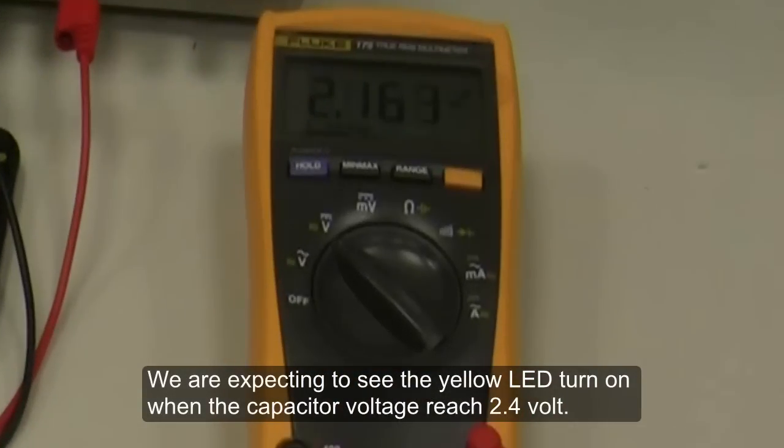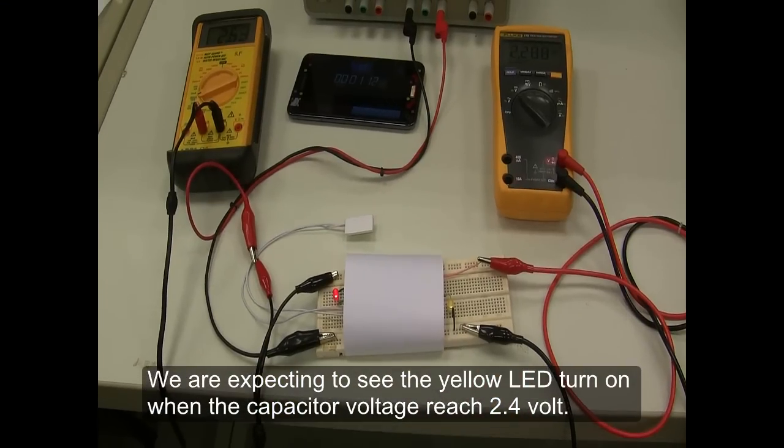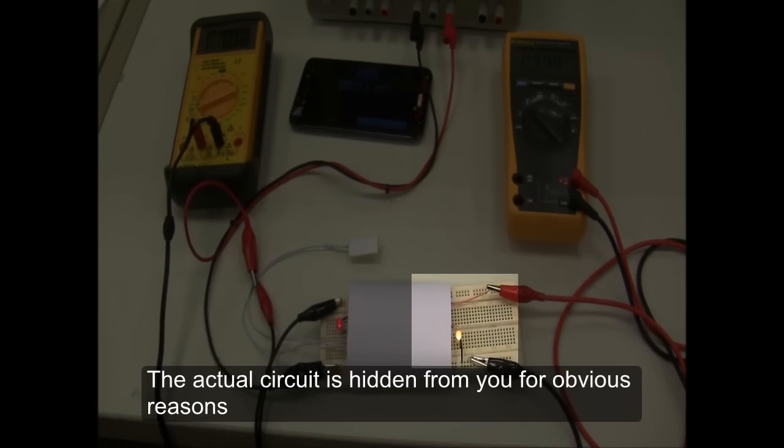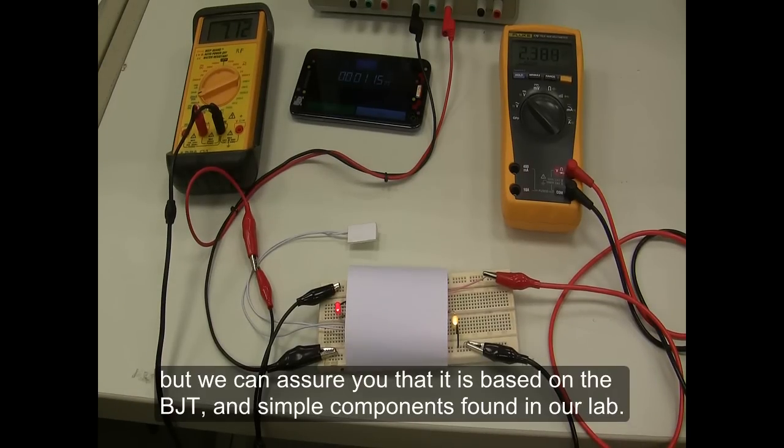We are expecting to see the yellow LED turn on when the capacitor voltage reaches 2.4 volts. The actual circuit is hidden from you for obvious reasons, but we can assure you that it is based on the BJT and simple components found in our lab.